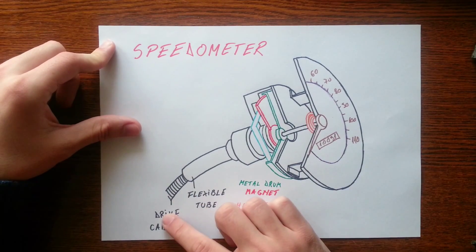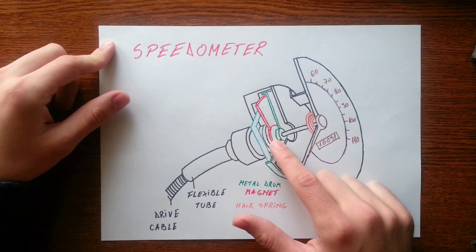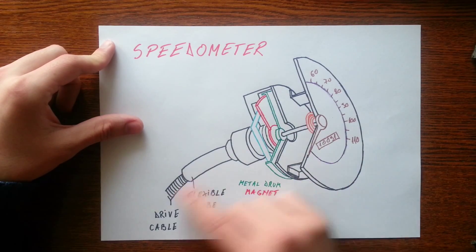A flexible drive cable inside the flexible tube links a small magnet inside the speedometer to the gearbox output shaft.